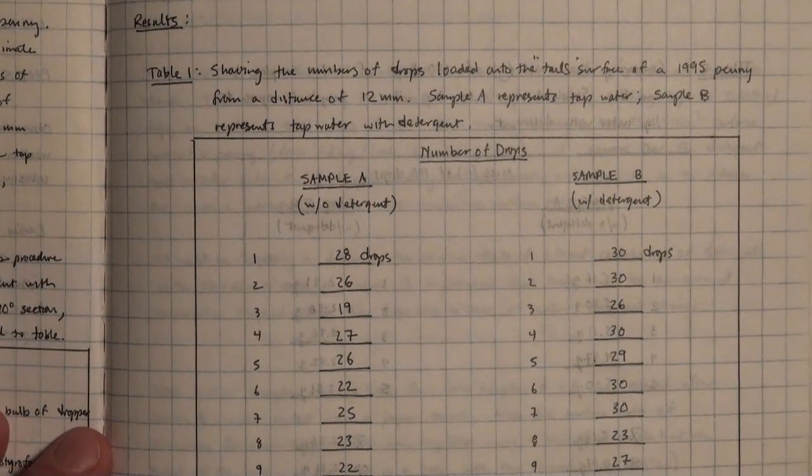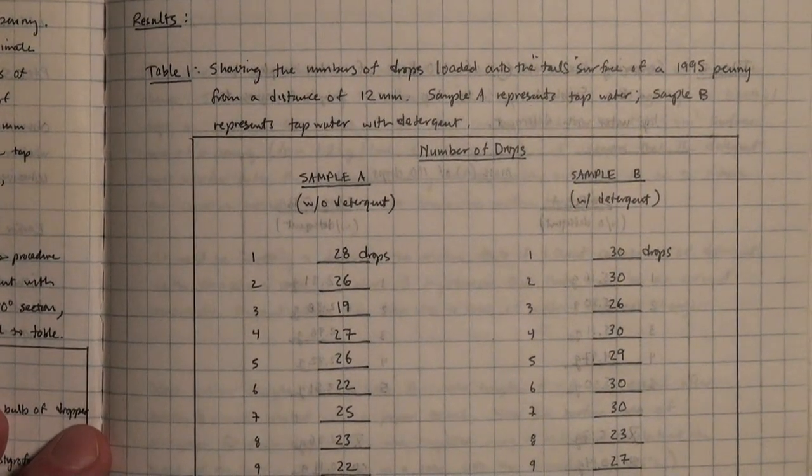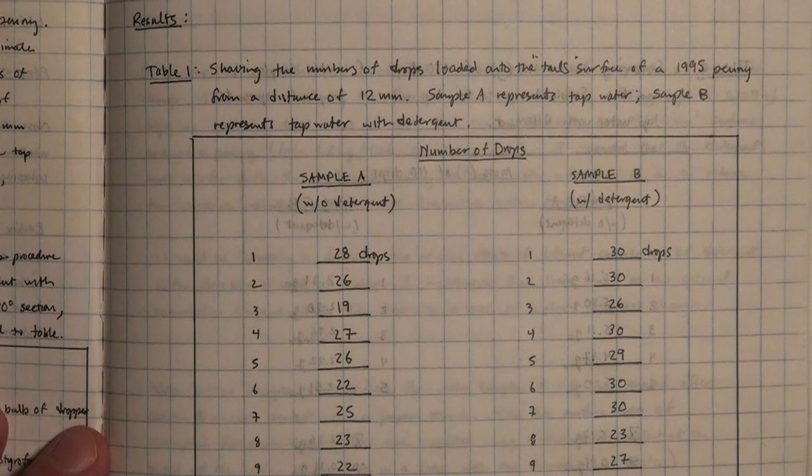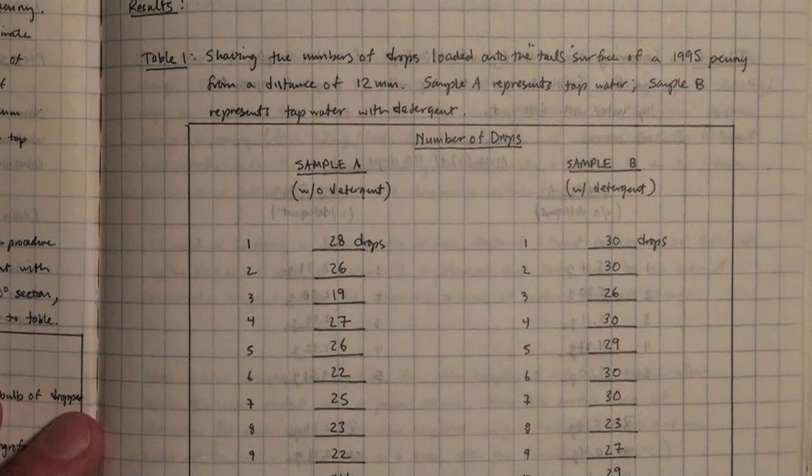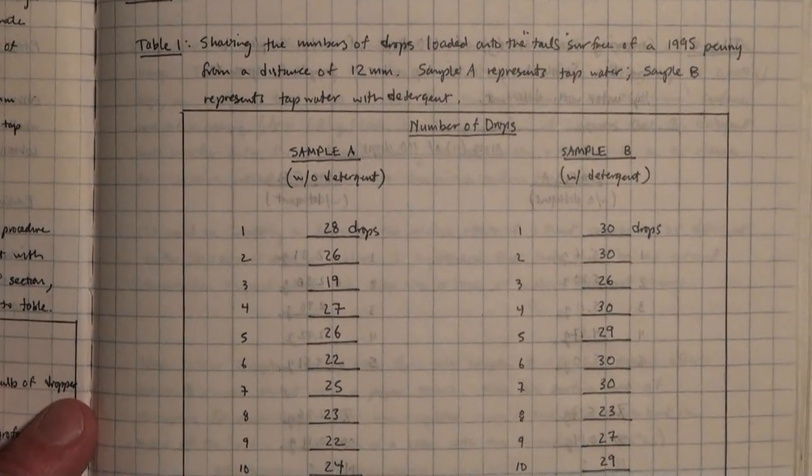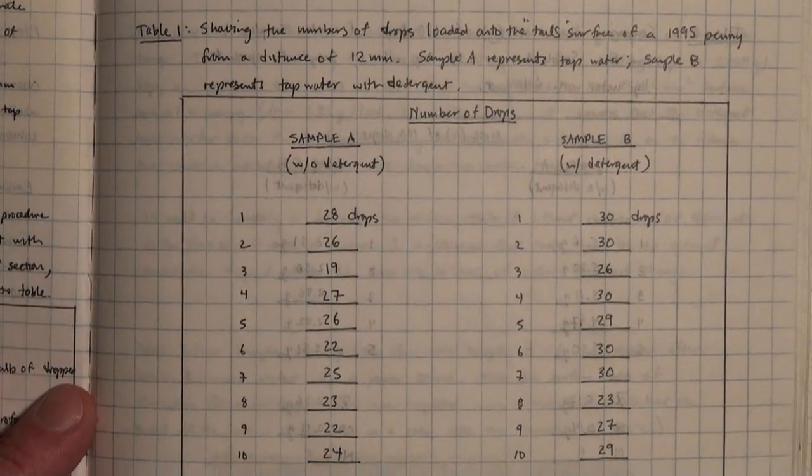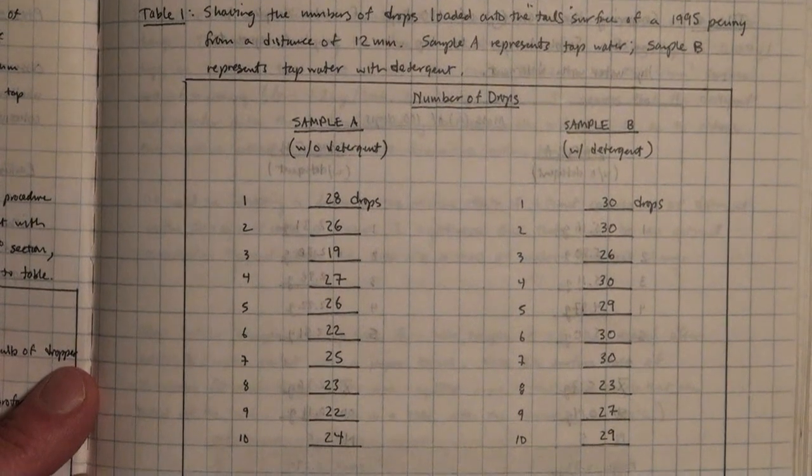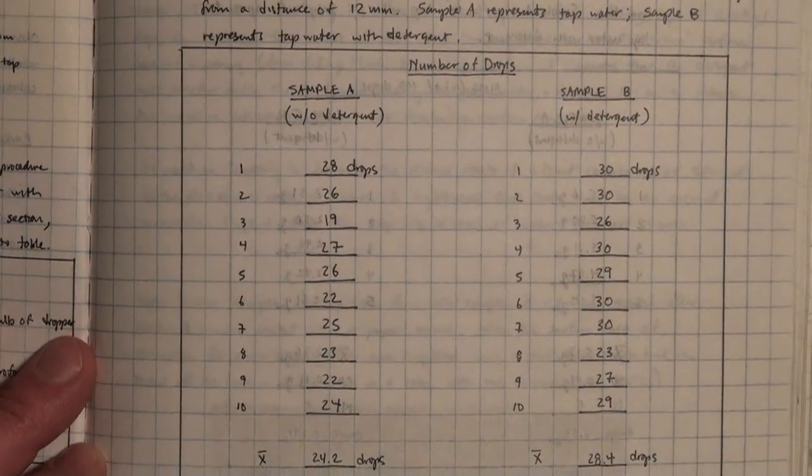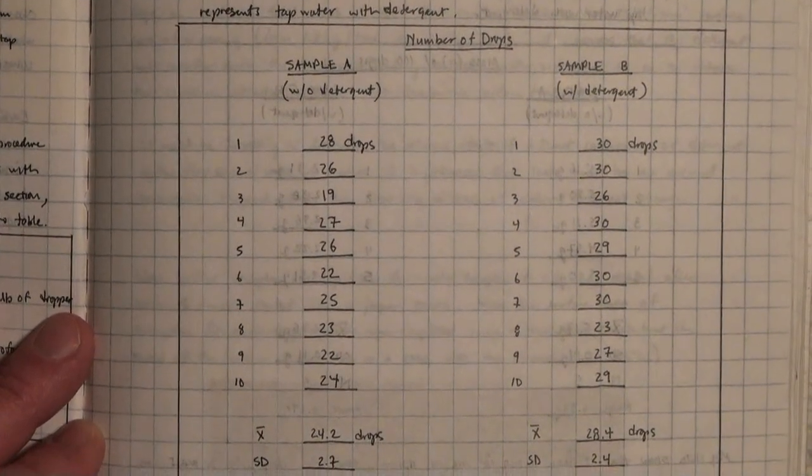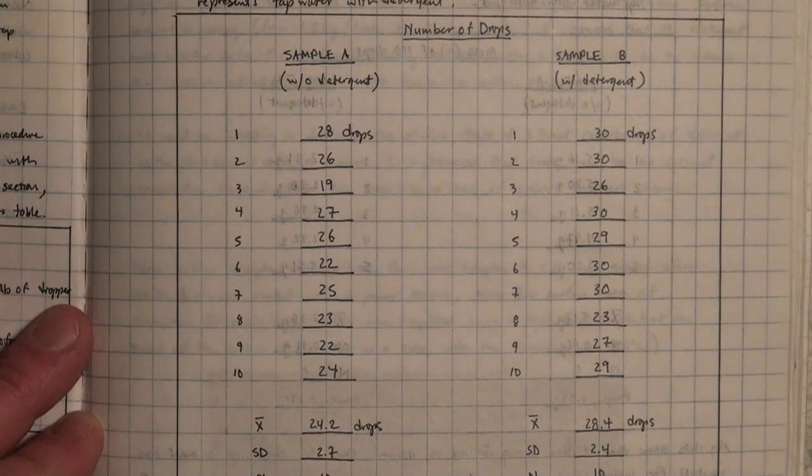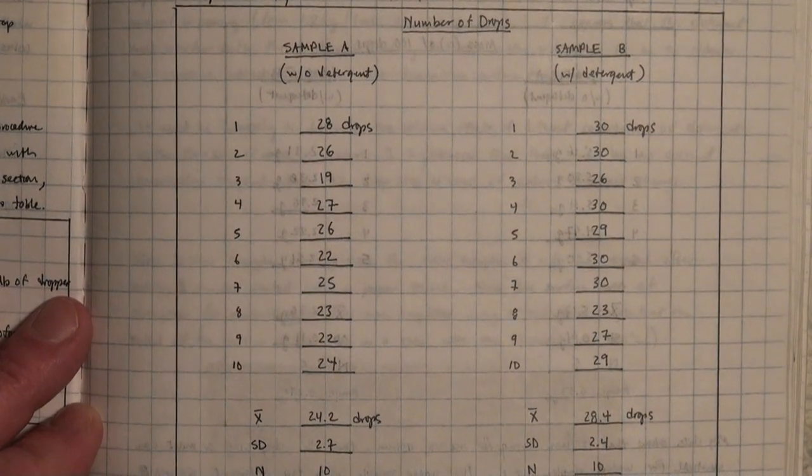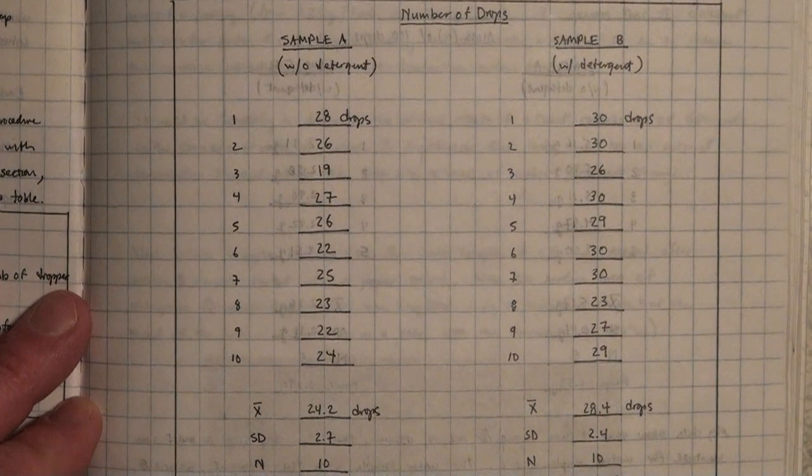My results are shown in Table 1, and you can see that here. I have in two columns, sample A and sample B, the column without detergent and the column with detergent. I show the actual data that I collected for each of the 10 runs, and I also show the summarizing statistics: the X-bar mean, the SD or standard deviation, the N which is the sample size, as well as the range.